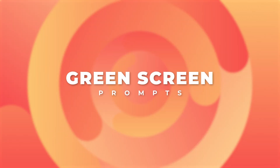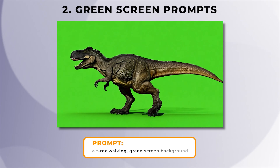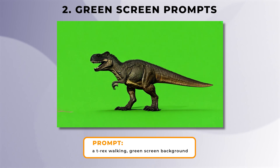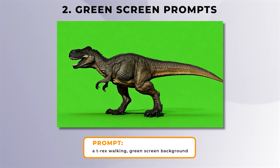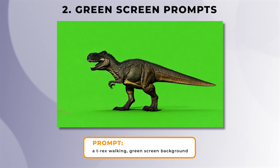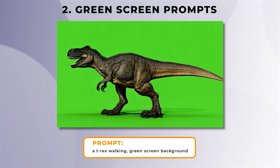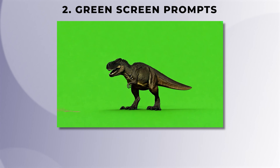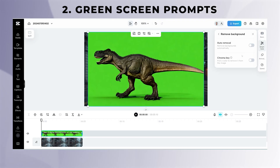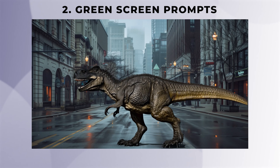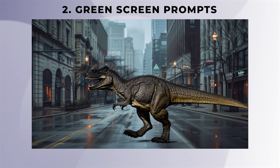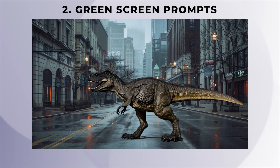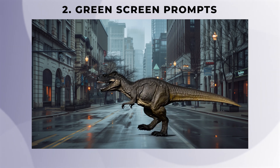Now let's have a look at the green screen prompt. This prompt is pretty special, especially if you're a video editor, as here is a clip I've made of a T-Rex walking with a green background. For the prompt, all you have to put in is 'green screen background' along with the subject that you want in the video. What's good about this is you can download it, then take it into your video editing software and use a green screen keying tool. As you can see, I've got the T-Rex walking through a different environment that I've made, and I think it looks pretty good.